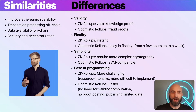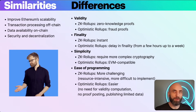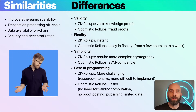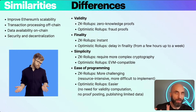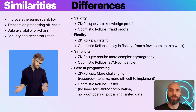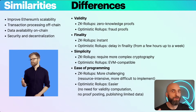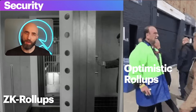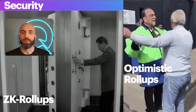Unless in terms of ZK rollups — it's Polygon zkEVM, which is also EVM compatible, and more and more EVM compatible ZK rollups are coming up seemingly weekly. In terms of ease of programming, ZK rollups are more challenging unless they are EVM compatible; they are more difficult to implement and cryptographic proofs are more resource intensive. Optimistic rollups are easier — there is no need for validity computation, no proof posting, limited data publishing, and they are EVM compatible as well.